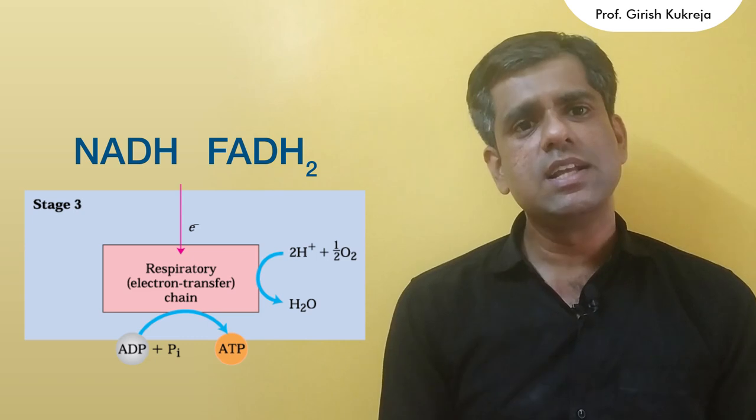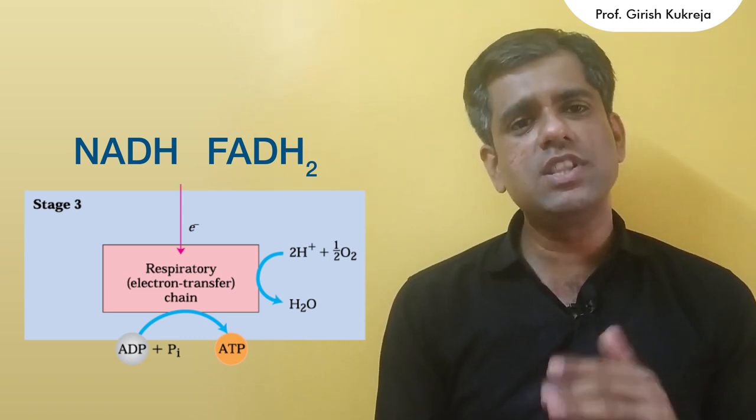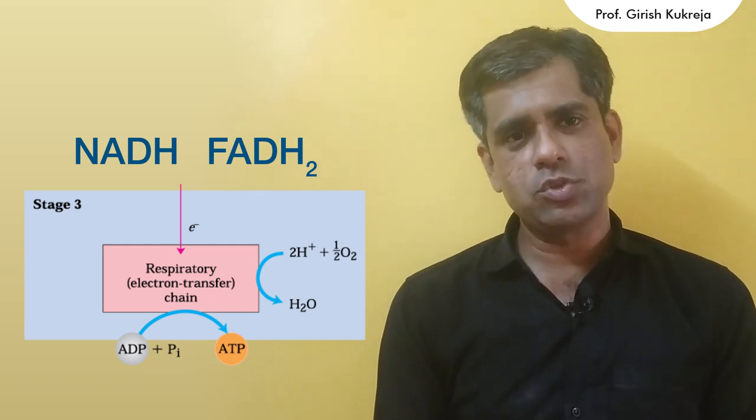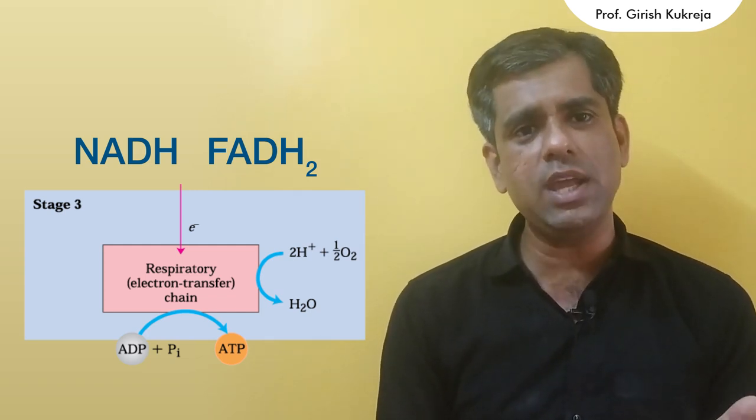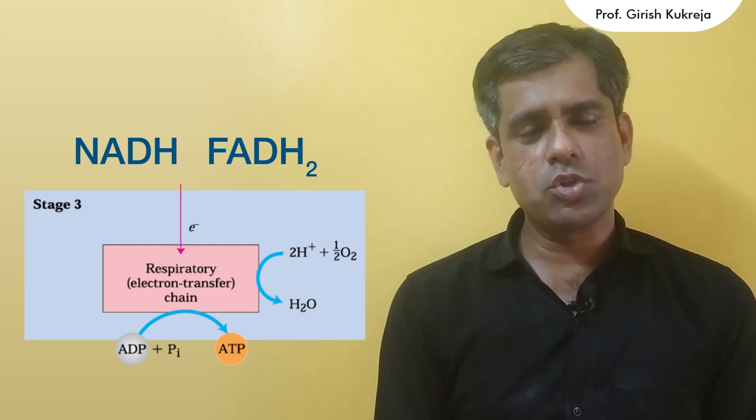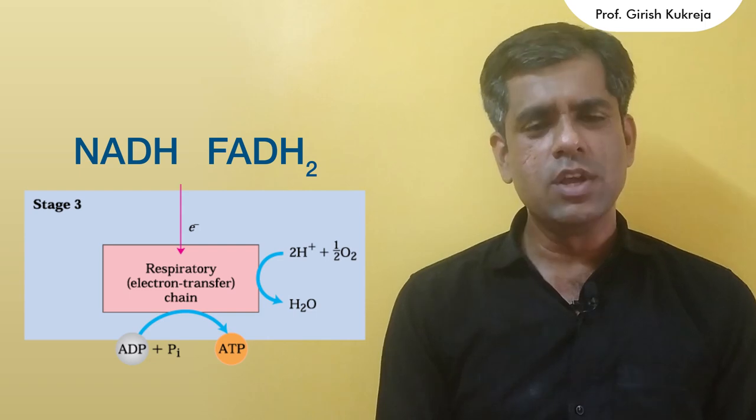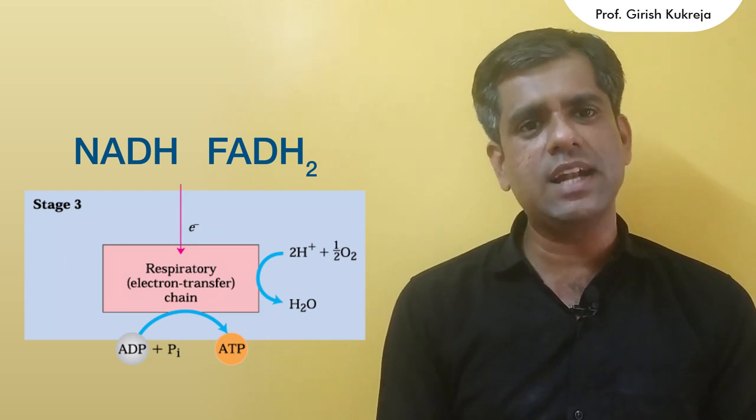In the process the electrons are transferred to oxygen with the concomitant conversion of ADP to ATP. Thus the energy of the fatty acid is conserved in the form of ATP. So let's have a closer look at this first stage that is beta oxidation.